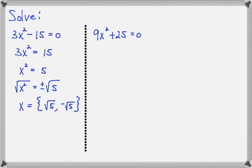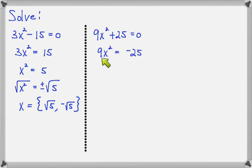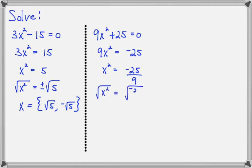Now let's look at 9x squared plus 25 equals 0. Again, the trick is to isolate the x squared term. Move the 25 to the right side and divide both sides by 9. Now we have x squared isolated and a number on the right side. The next step is to take the square root of both sides — put radicals over both sides — and we have to put a plus/minus in front of that.